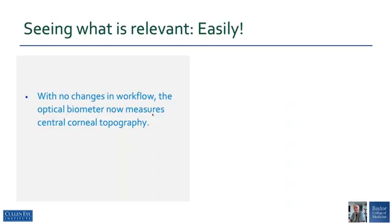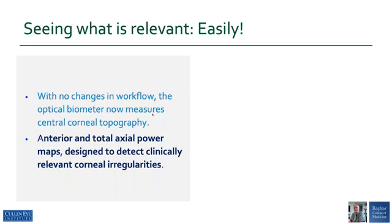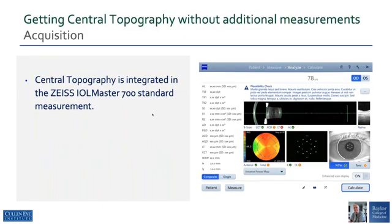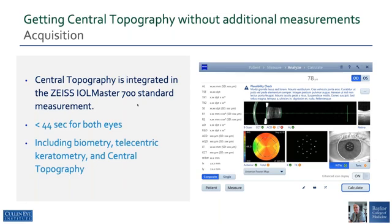This has been implemented in the IOMaster in a very unique way so that with no changes in your workflow, the device now measures central corneal topography, in which anterior and total axial power maps are displayed that will provide the clinician with a very quick but fairly comprehensive view of corneal irregularities. The display is now integrated with the B-scan, the white-to-white, the LEDs, and total central topography. The measurement takes less than 44 seconds for both eyes, and includes the biometry, telecentric keratometry, and central topography.